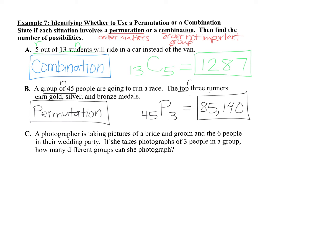Let's look at part C here. A photographer is taking pictures of a bride and groom and the 6 people in their wedding party. If she takes photographs of 3 people in a group, how many different groups can she photograph? Now be careful on this question, because there's actually more than 6 people. The 6 people is just the wedding party. We also need to include the bride and the groom, which is an additional 2 people. So 2 plus 6 is 8. We have 8 people to pick from, and the photographer wants to take pictures of people in groups of 3. For groups of 3, the order doesn't matter. We just want to pair 3 people together. So our N value, our total, is 8, and our R is 3. And since order doesn't matter, this is another combination problem.